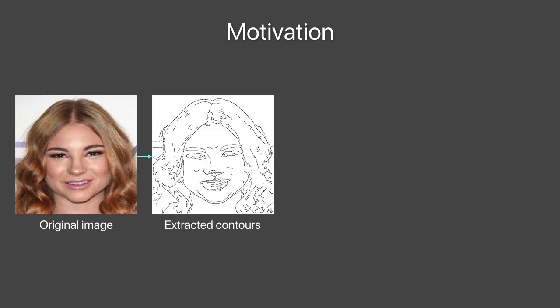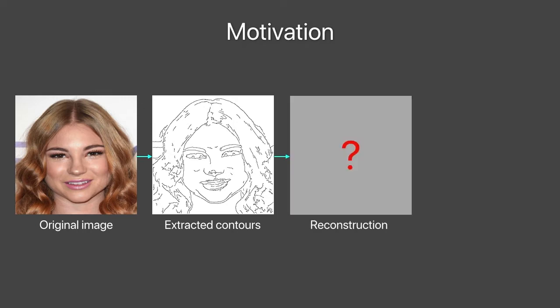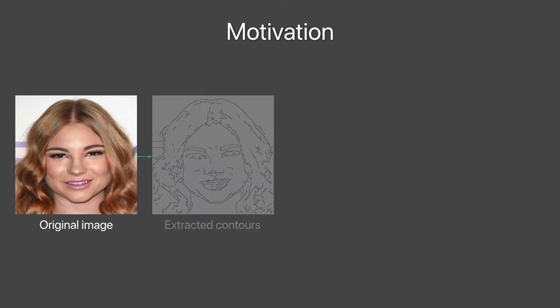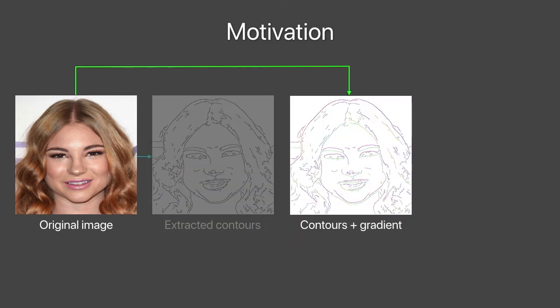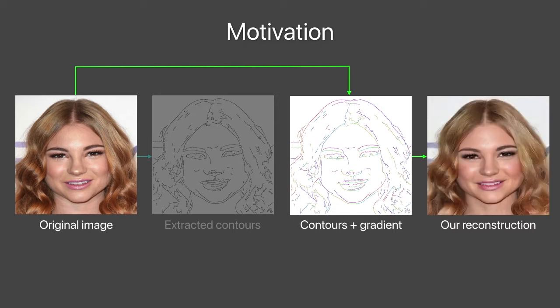Contours are concise and perceptually meaningful representations of images. While image-to-contour methods exist, recovering an image from contours remains an open problem. In this work, we show that given sparse contours and gradient information on contour pixels, high-quality reconstructions can be obtained through our model.